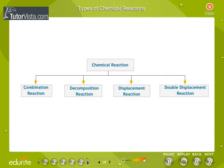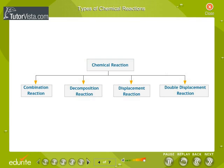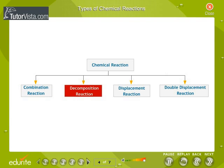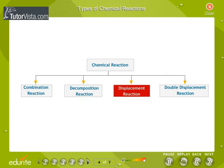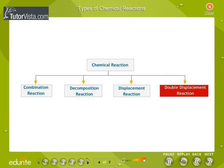Types of chemical reactions: chemical reactions may be classified in different ways. Some widely used terms for describing common kinds of reactions include: combination reaction, decomposition reaction, displacement reaction, and double displacement reaction.